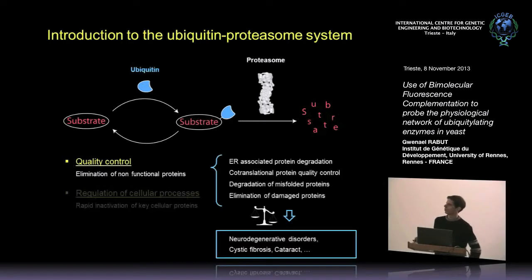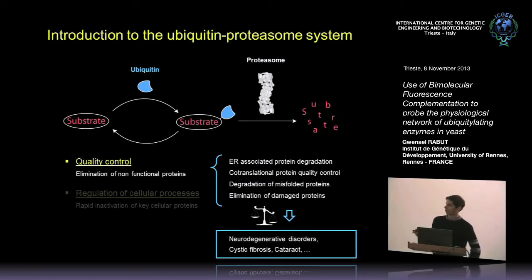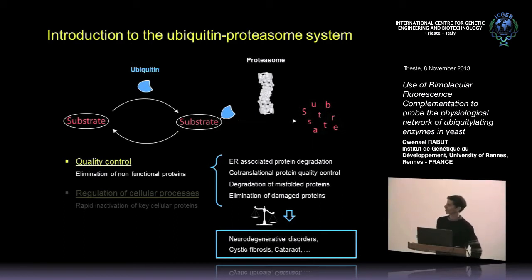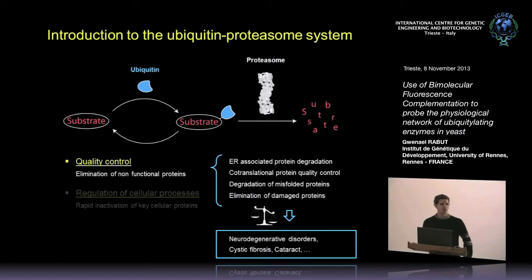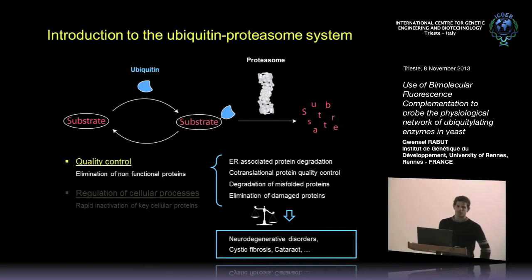Most ubiquitination events that occur in the cell at any given time come from quality control ubiquitination. There are many molecular mechanisms for quality control that lead to ubiquitination and proteasome degradation. One of the most studied is ERAD — ER-associated protein degradation — which involves the quality control of secreted and membrane proteins.